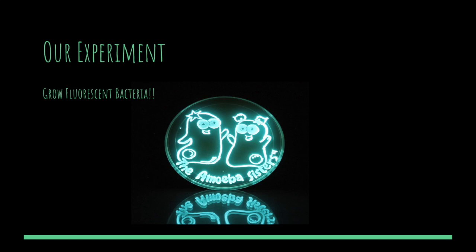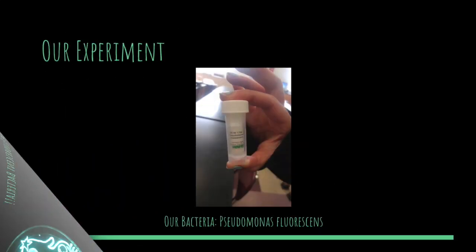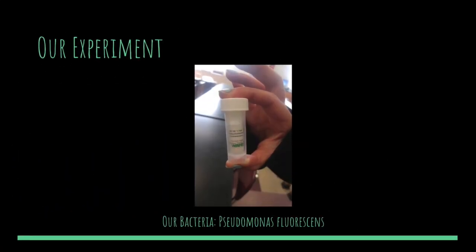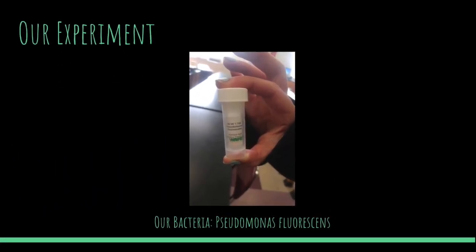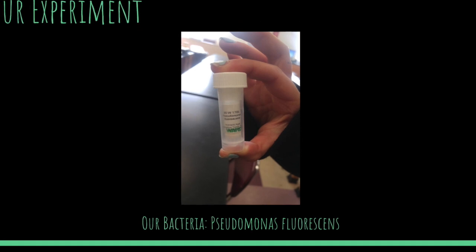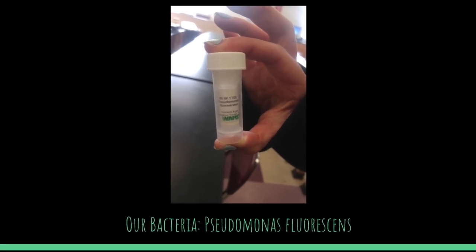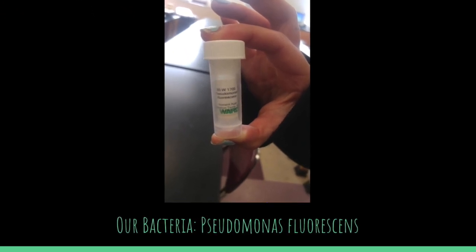The experiment we did was an attempt to grow bioluminescent bacteria in a lab, which required us to grow the bacteria in a nutrient broth and to spread it onto plates to observe the formation of colonies and test for bioluminescence. The bacteria we used was Pseudomonas fluorescens, a common rod-shaped bacterium that glows under ultraviolet light.